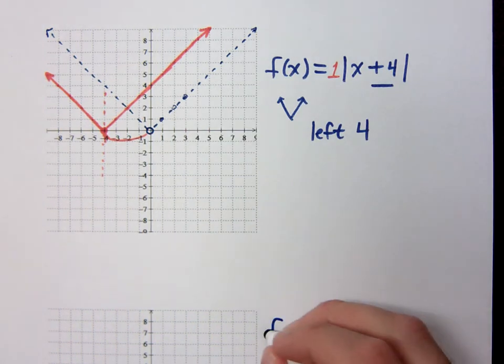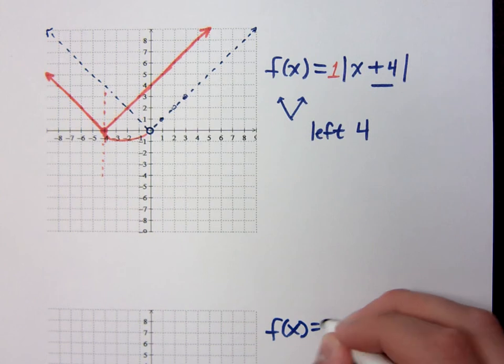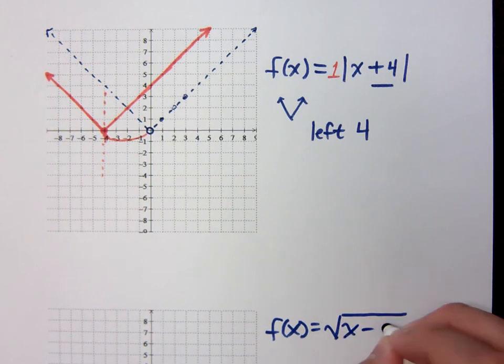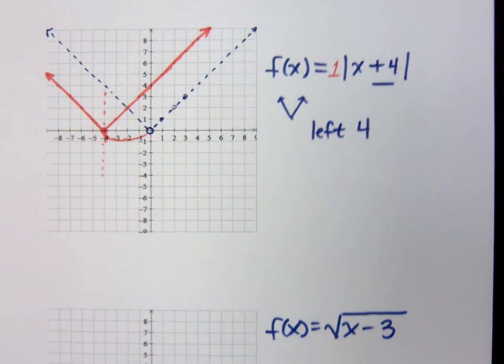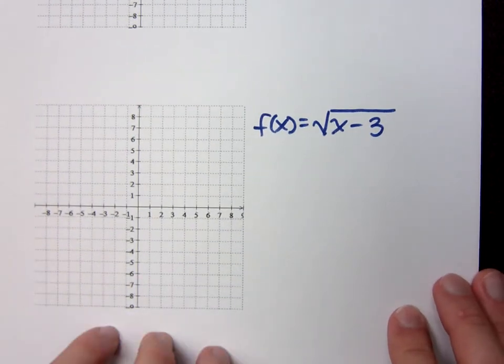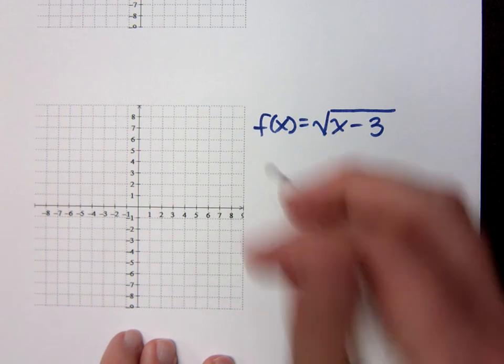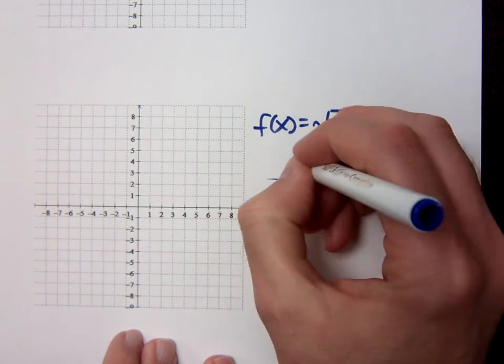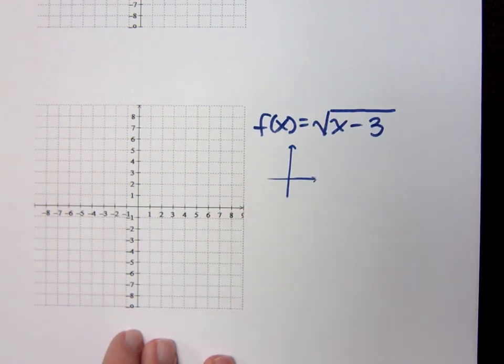The other example I had was the square root of x minus 3. So when I look at the graph of this, well, what is the graph? What did he look like?